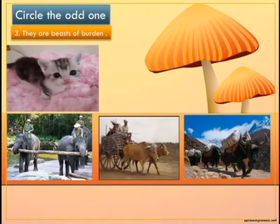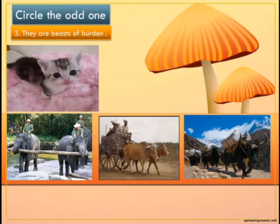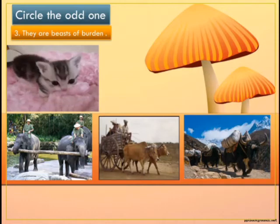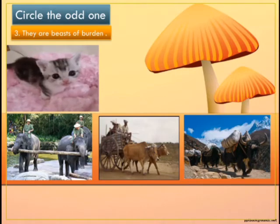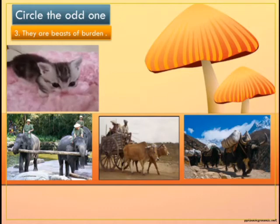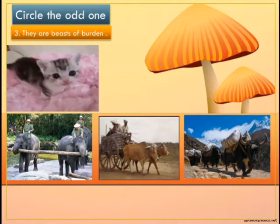Number three, here we have a set of beasts of burden. If you observe this picture carefully, you can see beasts of burden like elephants carrying load, a bullock, and a yak — these examples are carrying load. But what about this cat? Can this cat carry load? No, it is a pet animal and a pet animal cannot carry load. So this is the odd one and we have to circle it.